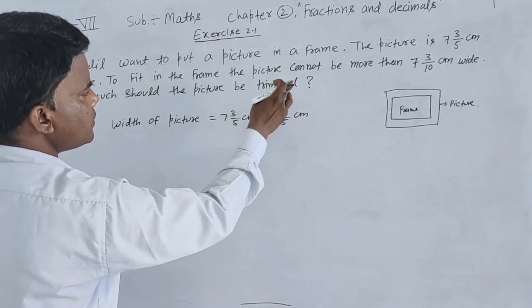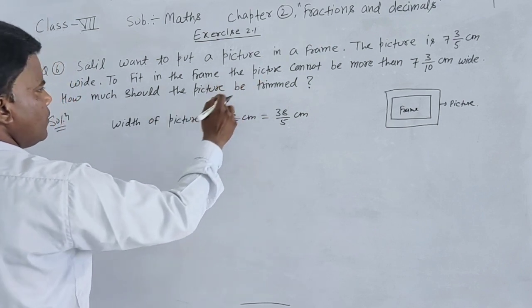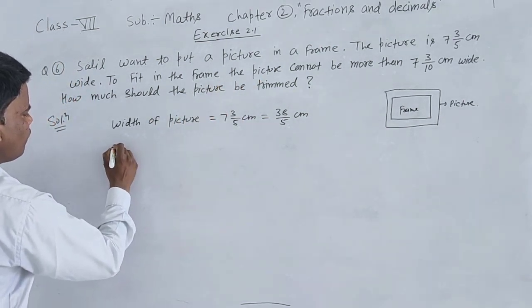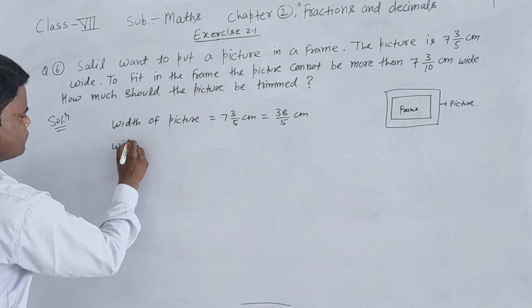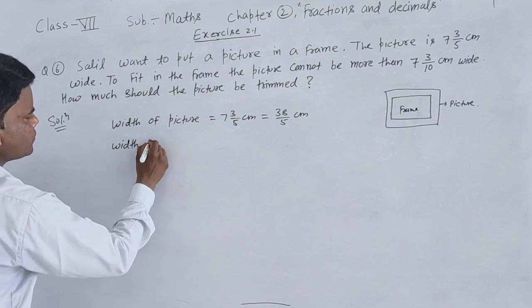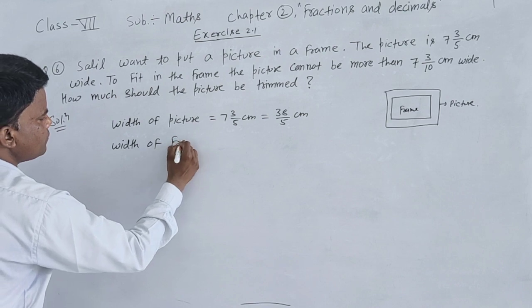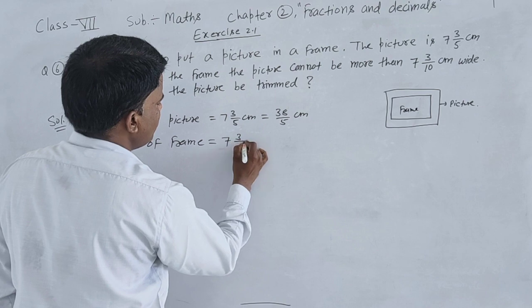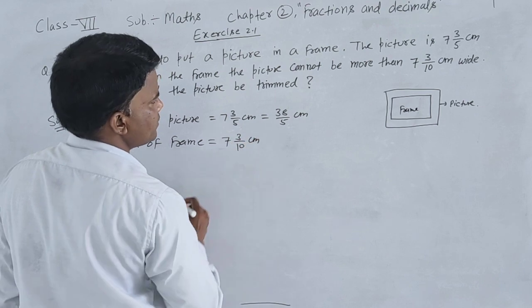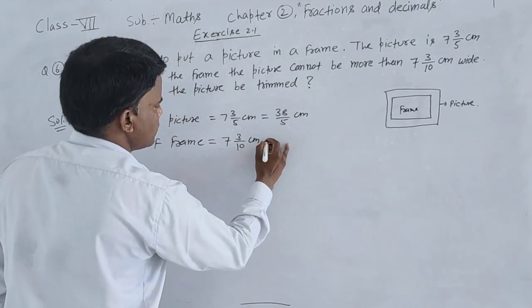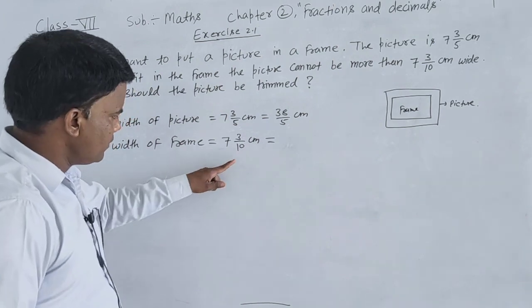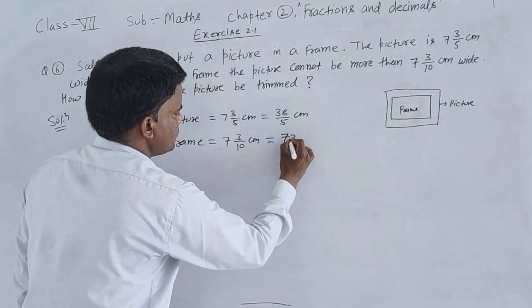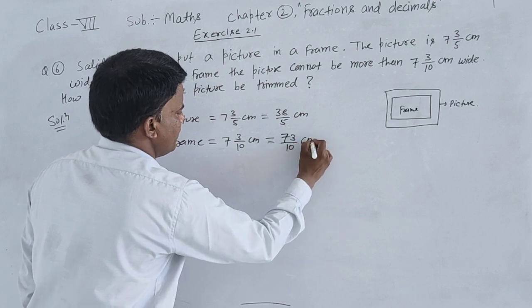And width of frame: given is 7 3/10 cm. Converting to improper fraction: 10 times 7 is 70, plus 3 is 73, so 73/10 cm.